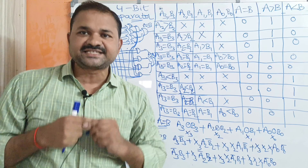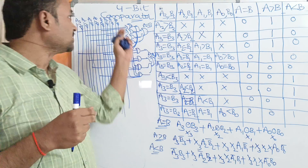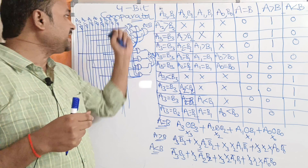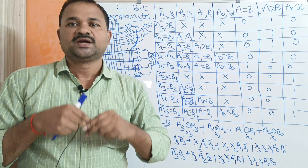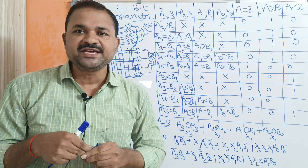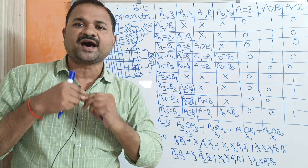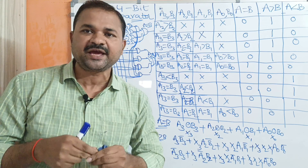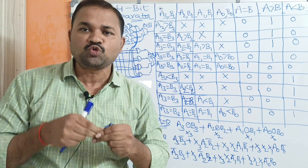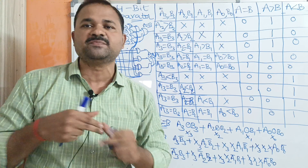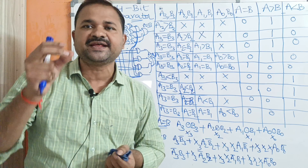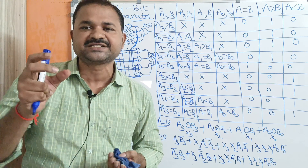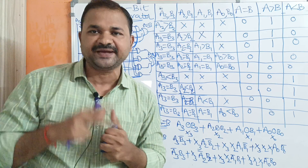Now let us discuss the 4-bit comparator. It is mainly useful in order to compare two binary numbers where each binary number contains 4 bits.